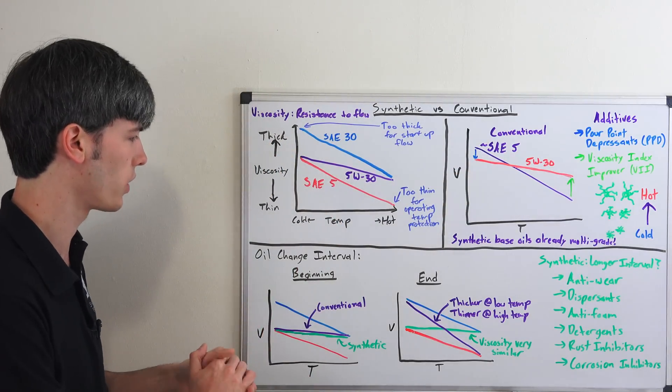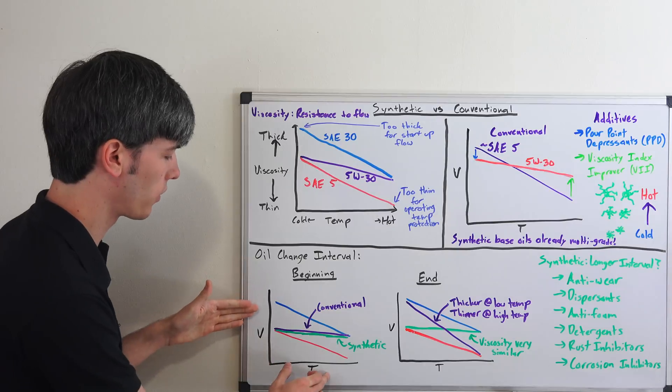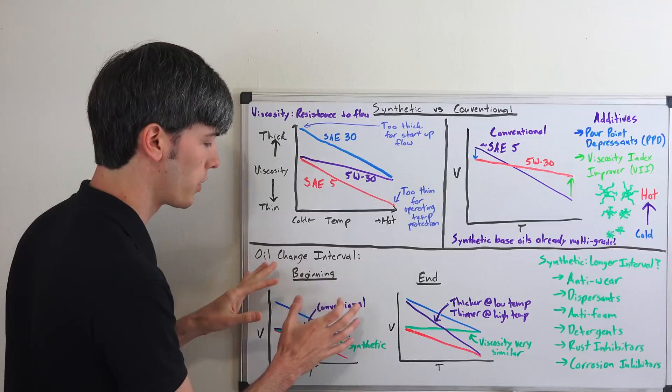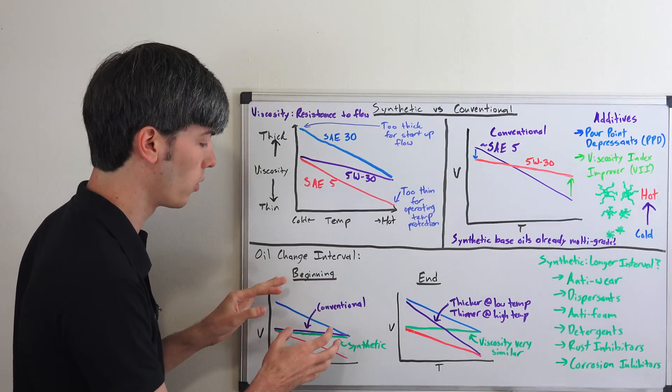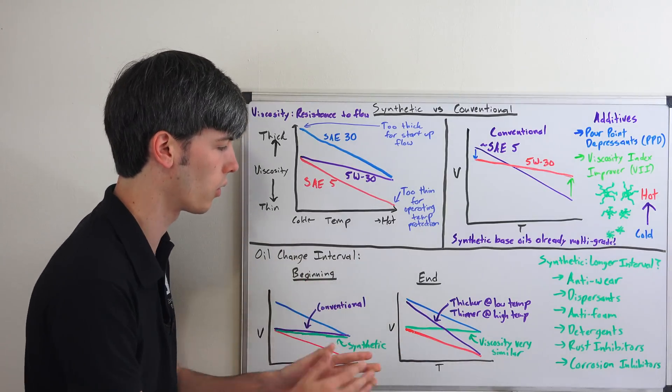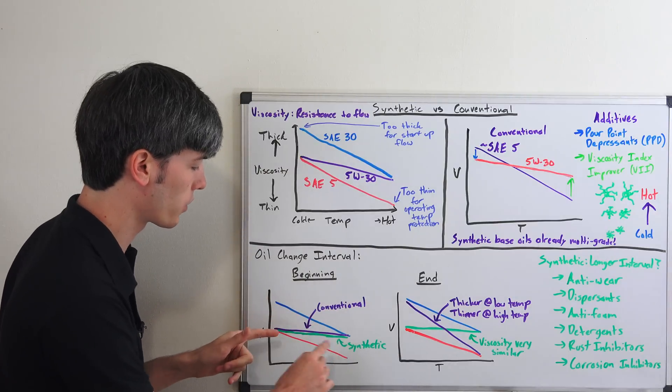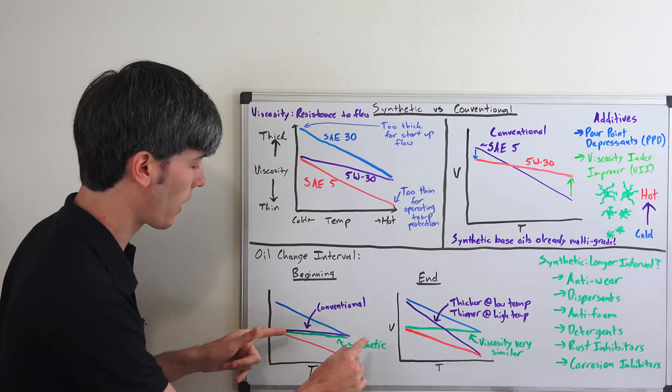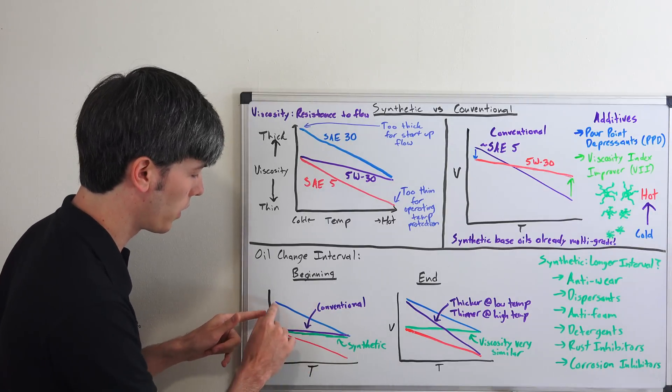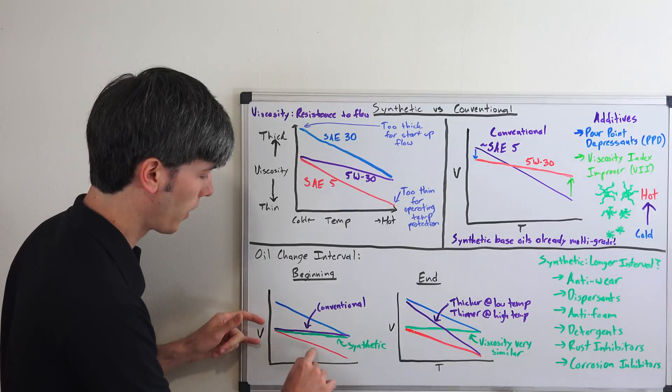So looking at the oil change interval here we have viscosity versus temperature and this is at the beginning of your oil change interval so you've just changed your oil you've got brand new oil in your car this is at the end so once you need to change the oil at this point and so if you're looking at conventional versus synthetic originally if you've got 5W30 their curves are going to look exactly the same in here so here's that SAE30 here's the SAE5.